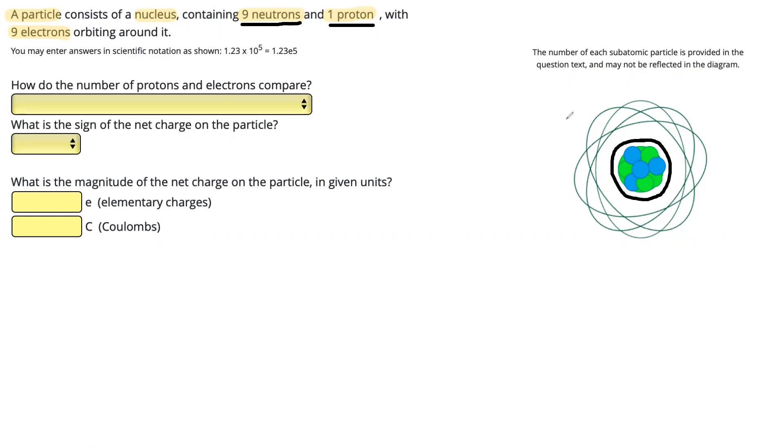However, we do know that those are both in the nucleus, and then orbiting around the outside shown by these rings, those are our nine electrons.